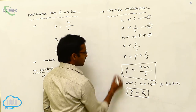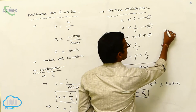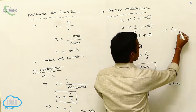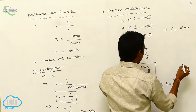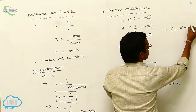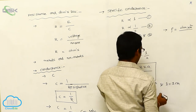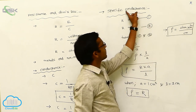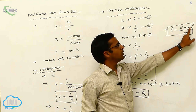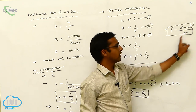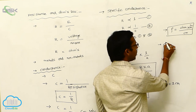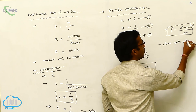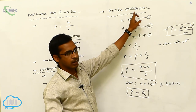The specific conductance units: rho equals resistance unit ohm, multiplied by area of cross section in cm², divided by length in cm. So the specific conductance unit is ohm·cm² per cm, or ohm·cm. This is the unit of specific conductance.